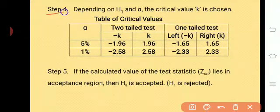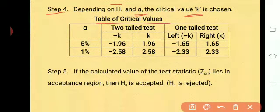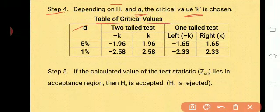Step 4: depending on the alternative hypothesis H1 and alpha, that is the level of significance, the critical value K is chosen from the statistical table. The level of significance alpha may be 5% or 1%. There are two types of tests: the two-tailed test and the one-tailed test. We studied what is meant by two-tailed and one-tailed tests.